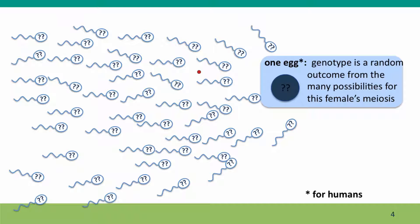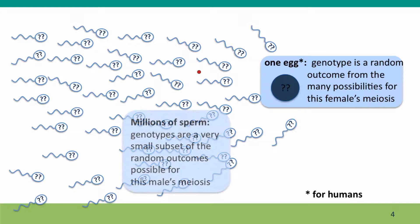So for an egg, the genotype is one random outcome from all the possibilities. And for a sperm, it's one of millions of random outcomes from the beyond-billions of possible outcomes for that person.